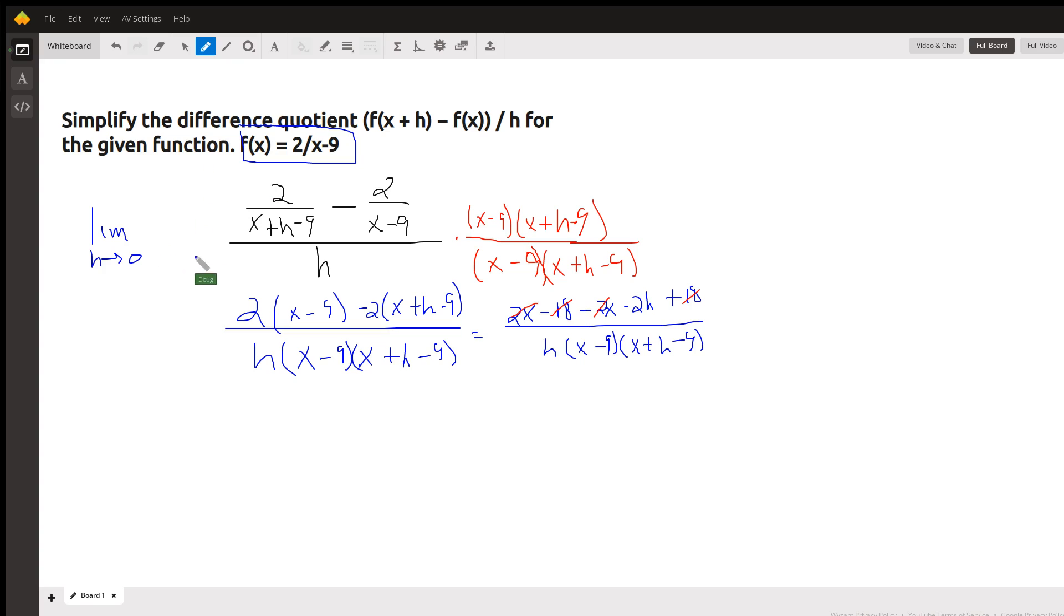But right now we're only concerned with evaluating the difference quotient. So here's the setup: f(x+h) minus f(x) over h. And to simplify this complex fraction, the easiest way to do that is to multiply numerator and denominator of the big fraction by the LCD of all the little denominators.